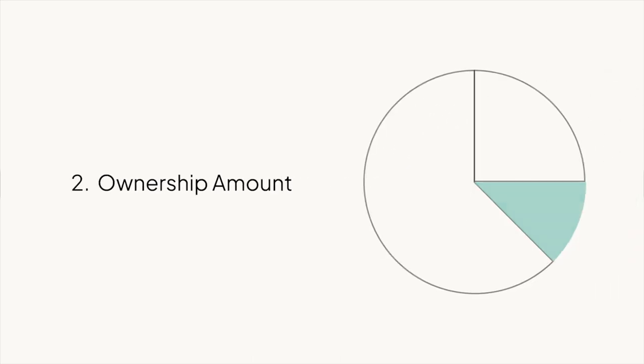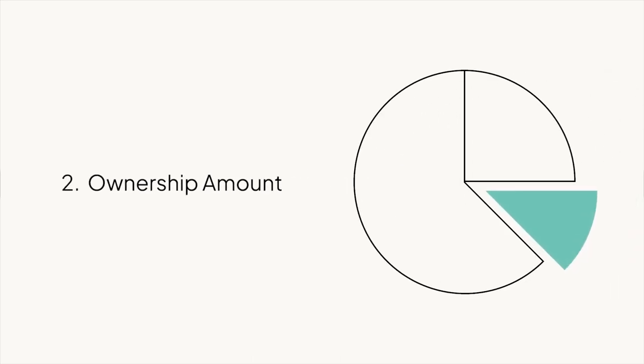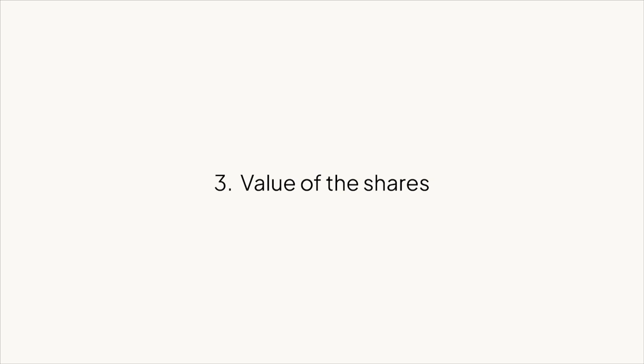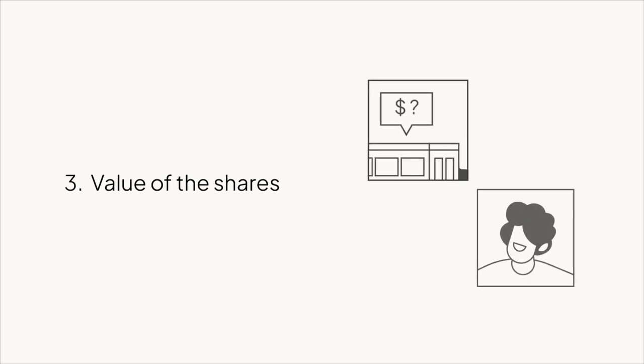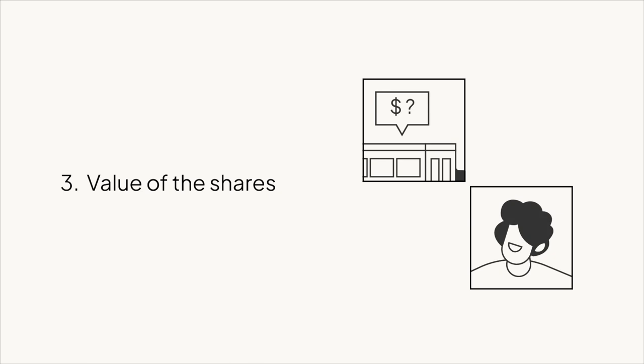Which leads to thing two: ownership amount. The cap table tracks how much of an ownership stake each of your stakeholders has, or how much they may have someday in the future. For this reason, your cap table is also an excellent planning tool for future scenarios. Third, your cap table tracks the value of everyone's shares, or if you're in a situation where you don't know what your company's worth yet, it helps you keep track of the rules by which that value will be determined.